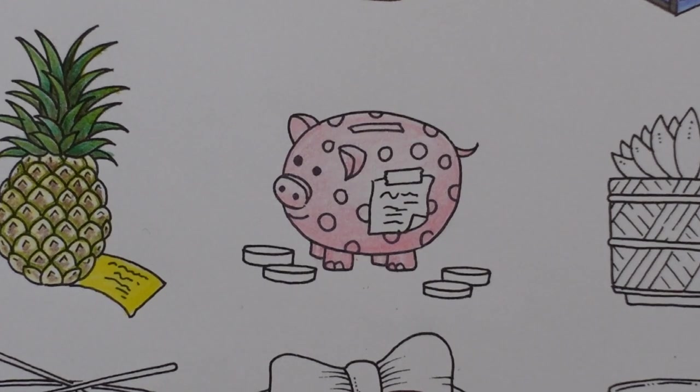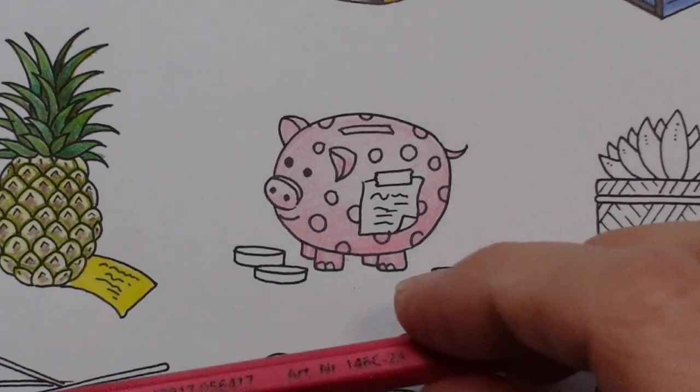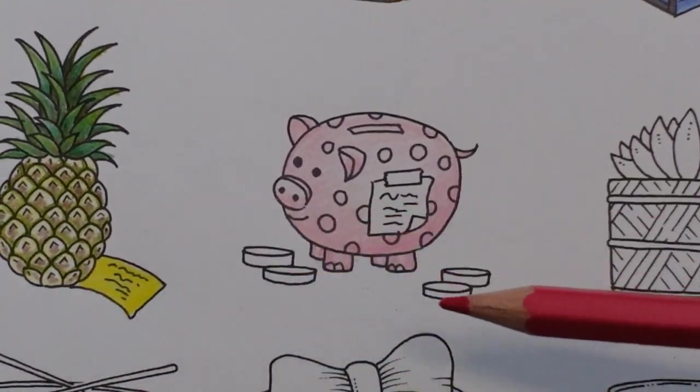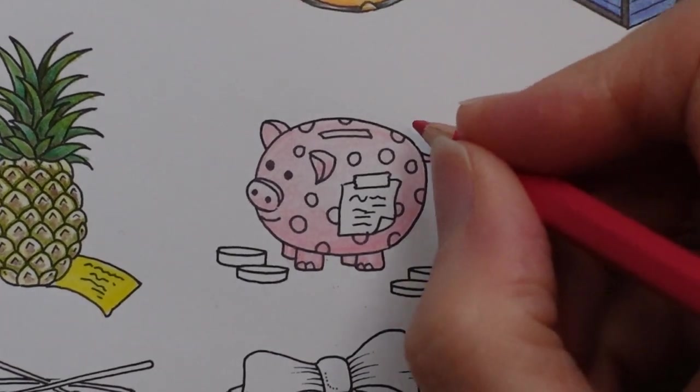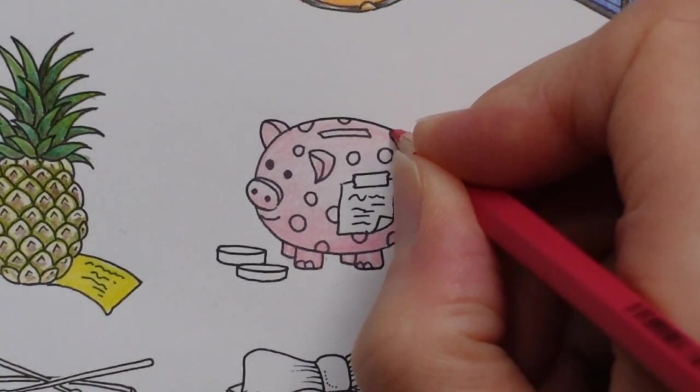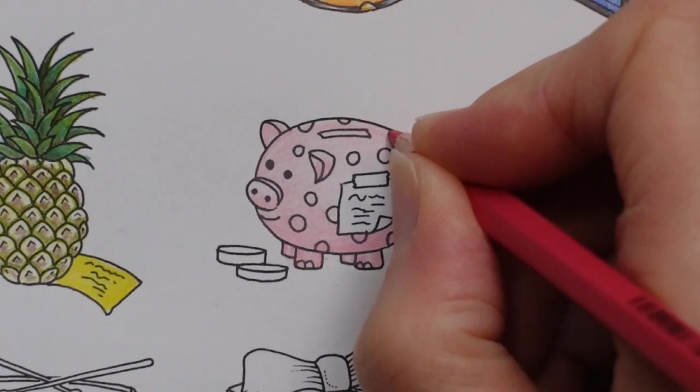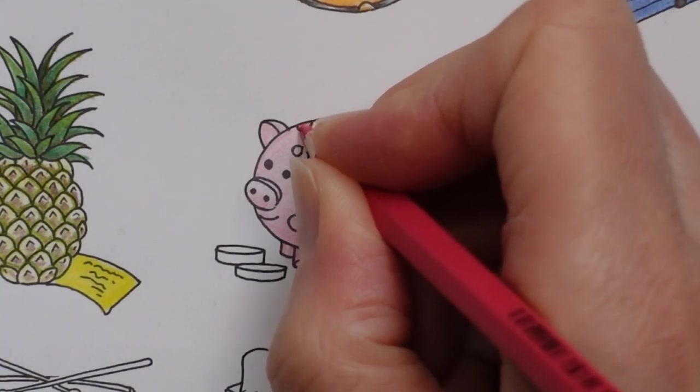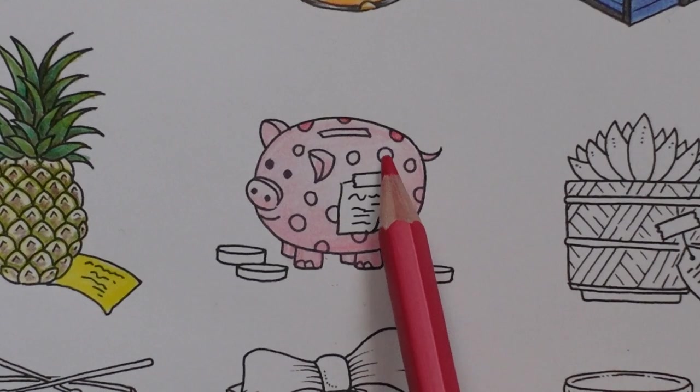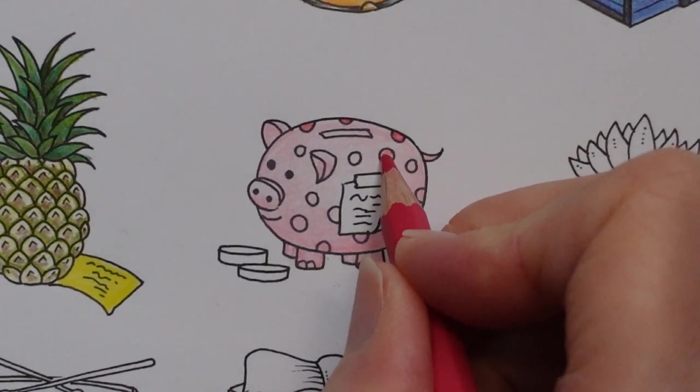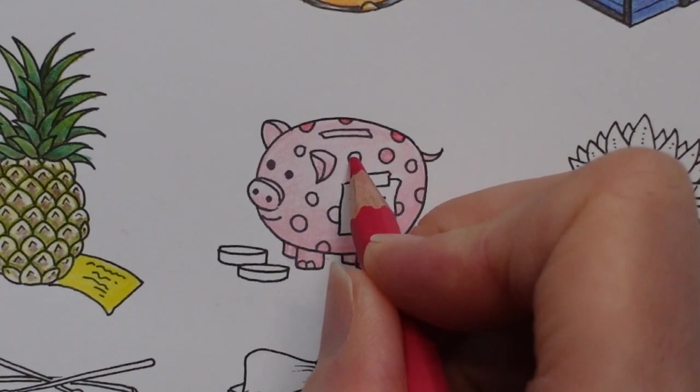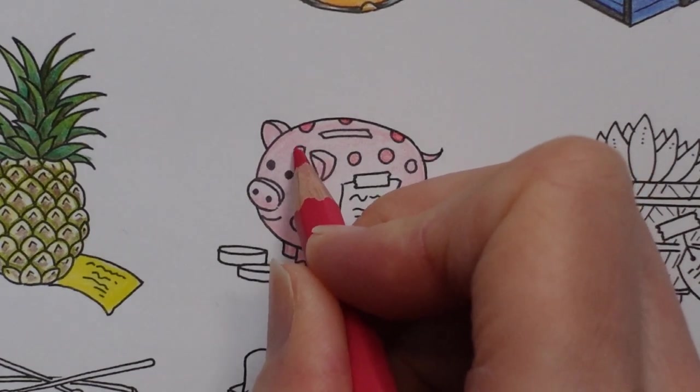But I'm going to grab the Bordeaux, which is number 23, to do the spots. So our spots are going to be darker. If you want white spots, you can at this point use a white Posca to make them white. But I'm going to use this Bordeaux. Now when you've shaded something like this, so this here is much lighter than this here. When you're doing the spots, you want to try and do that too.